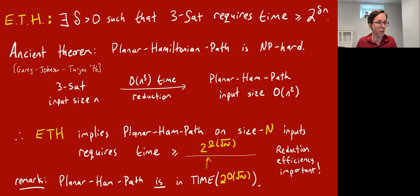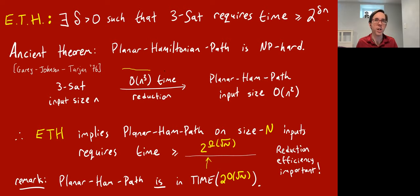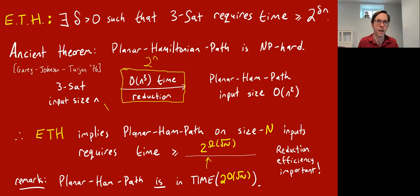There's a question regarding potential algorithms for reducing 3-SAT to planar Hamiltonian path: could there be an exponential time reduction? Yes, maybe. If this reduction took 2^n time, you wouldn't be able to make any of these conclusions, because the reduction time would swamp your algorithm time for 3-SAT. In fact, there is a 2^n time reduction — the reduction can just solve 3-SAT itself in 2^n time, and then based on whether the instance was satisfiable or unsatisfiable, it'll output some trivial constant-size planar graph which either does or does not have a Hamiltonian path.